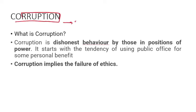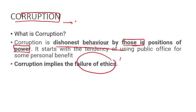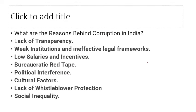Corruption is defined as dishonest behavior by those in positions of power — taking money to do someone's work, passing files, favoring someone, helping with promotions, promoting one's own children. It implies failure of ethics — when your ethics and moral values are zero, you become involved in corruption.